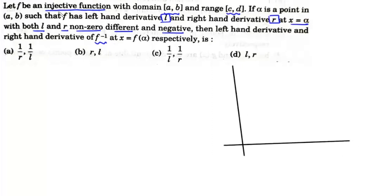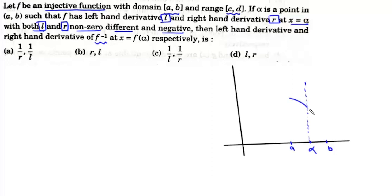We are given this function which is one-one, defined from a to b. It is not differentiable at alpha. Its left hand derivative at alpha is l, which is negative, and its right hand derivative at alpha is r, which is also negative. Since the left hand derivative at alpha is l (negative), this function is decreasing in the left neighborhood of alpha, and since the right hand derivative r is also negative (but different), the function is also decreasing on the right neighborhood of alpha, but with a different slope.